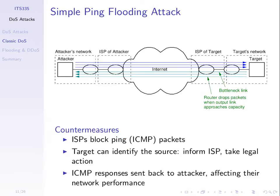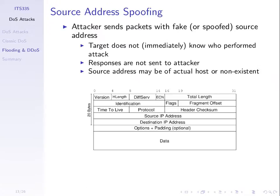There are some variations. One is to use a fake source address when we send our data. There are different purposes: one is to hide. One way to stop or recover from a denial of service attack is to find out who is doing the attack and take some action — either blocking the data they're sending or taking legal action. So if the attacker can hide themselves, that makes stopping the attack harder. Sending messages with a fake source address is one way to hide. But we'll also use a spoofed source address to make the attack more powerful.